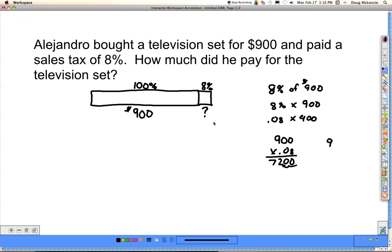That's the sales tax. So that goes here. And to get the total, we're going to want to add 900 plus 72, and that is $972. So he paid $972 for the television set.